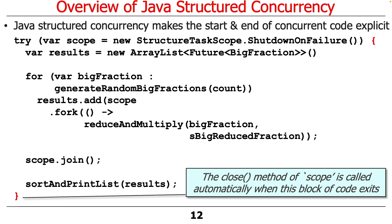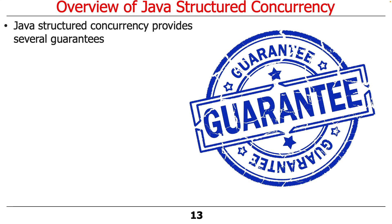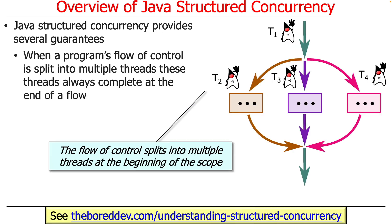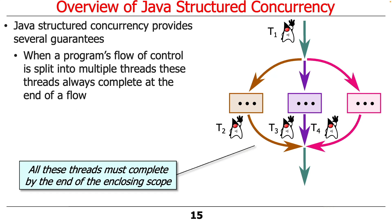The idea is to bound the scope over which things can run. Java structured concurrency is designed to provide several guarantees. One of which is when a program's flow of control is split into multiple threads, you can take one thread and split it into multiple threads. These threads always complete when the block's flow is done. So when we're done computing all the processing in threads T2, T3, and T4, they will join back together again and T1 can go on its merry way with the results. All threads have to finish by the time the scope is exited — that's what makes it structured.